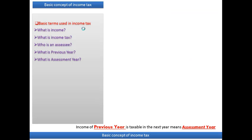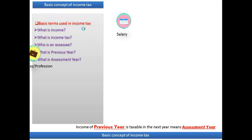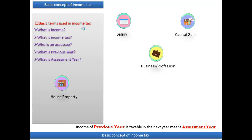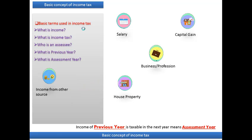Now let's move to the next slide to understand the concept of income tax. As you know, there are five types of income in income tax: first, salary; second, business or profession; third, capital gain; fourth, house property; and the last one is income from other sources.